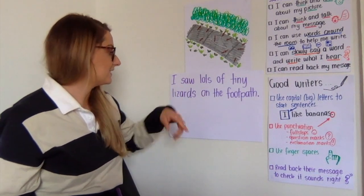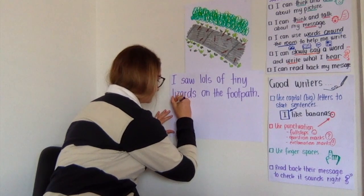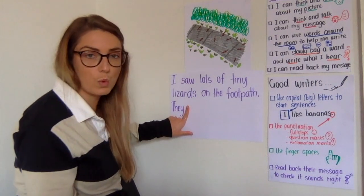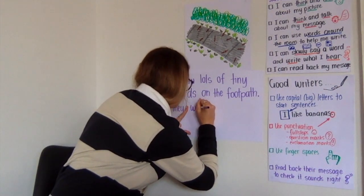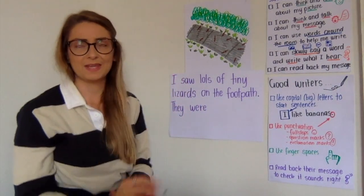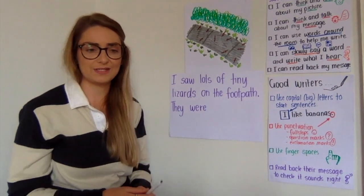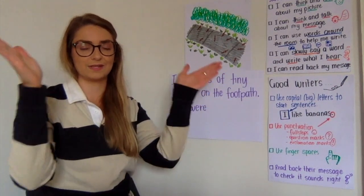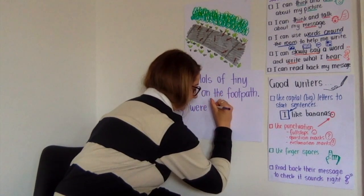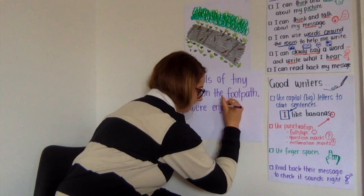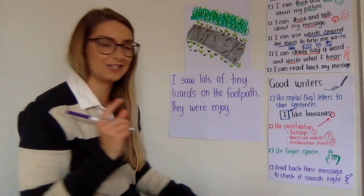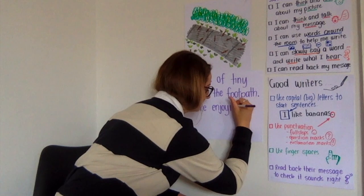Instead of saying 'the lizards', I'm going to say 'they'. So I'm starting with a big letter because it's the start of the sentence. They were enjoying... Well, that's a tricky word, isn't it? Enjoying. There are three parts in there, so if I clapped it out there'd be three parts: en-joy-ing. I can hear 'in' — that's E-N. Joy. Ing — I know that one! ING is I-N-G. Remember, those three letters make the ING sound.